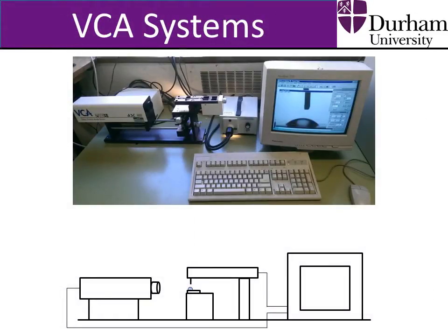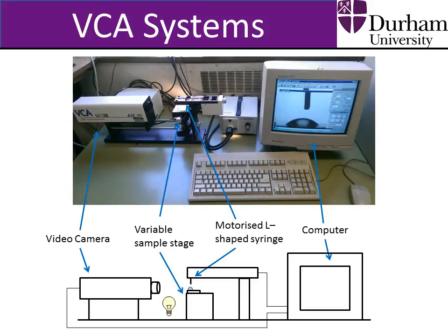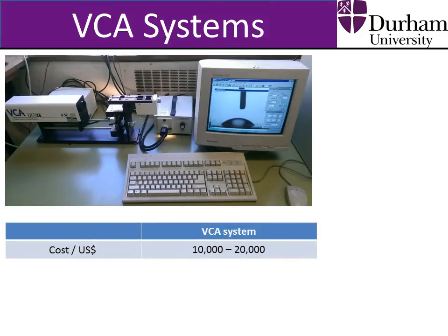Contact angle is typically measured using a video contact angle system, or VCA. The most basic system consists of a video camera and a motorised syringe that are attached to a computer, as well as a variable sample stage. A light module is also often included in case there isn't sufficient illumination. There are more sophisticated systems that allow the sample stage to be tilted, or that contain modules to control the humidity. But even this basic system costs between 10 and 20 thousand US dollars.